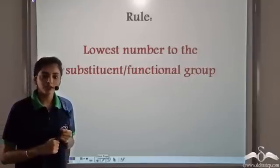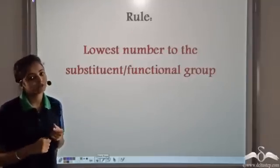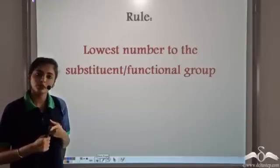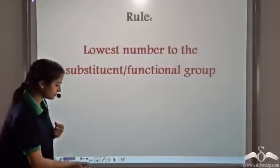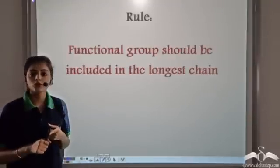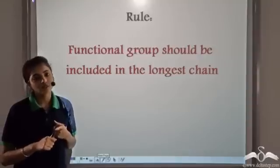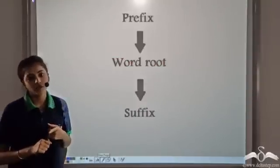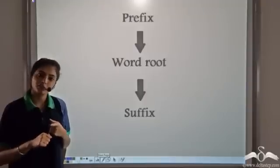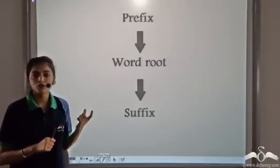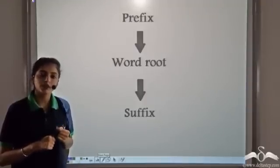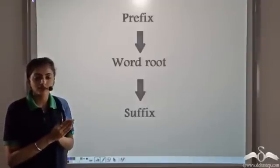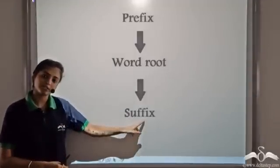For giving IUPAC names to organic compounds we follow certain rules. The first rule is we give the lowest number to the substituent or the functional group. The functional group should always be included in the longest carbon chain. The IUPAC name consists of three parts: the substituents give the prefix; then we get the word root from the number of carbon atoms in the longest carbon chain; and based on the functional group present in the compound, we get the suffix.